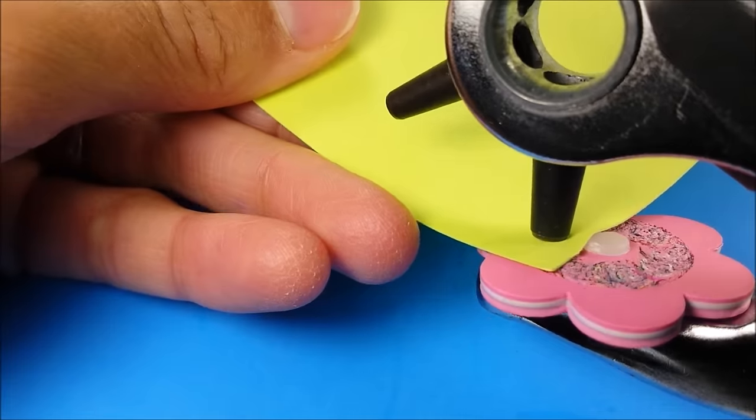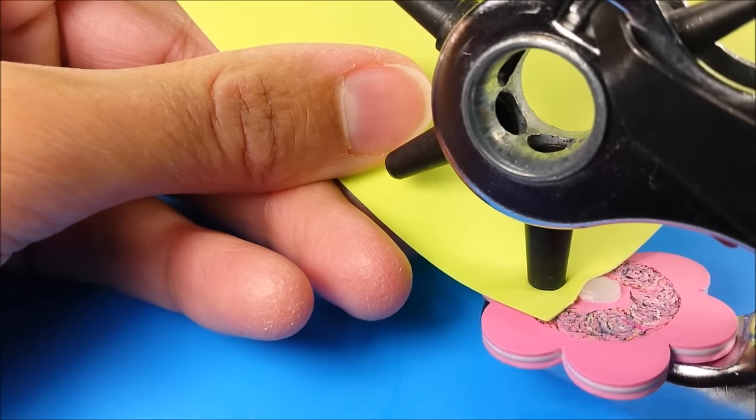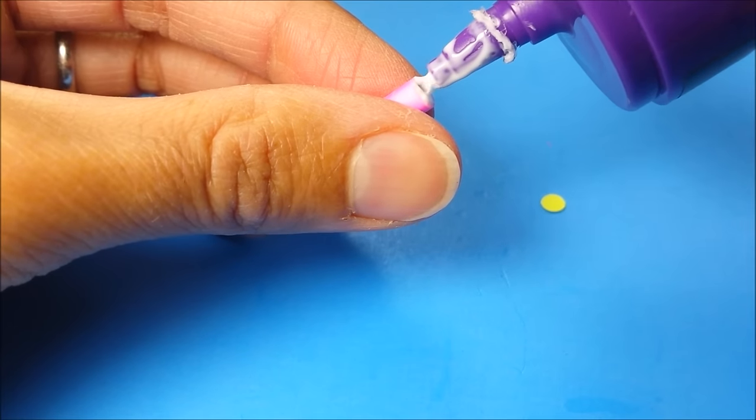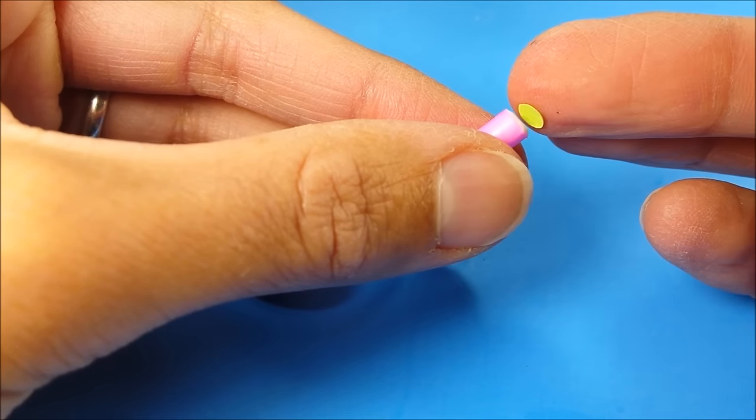And then using one of the larger settings on my multi hole punch I punch out another piece of cardstock and glue it to the top.